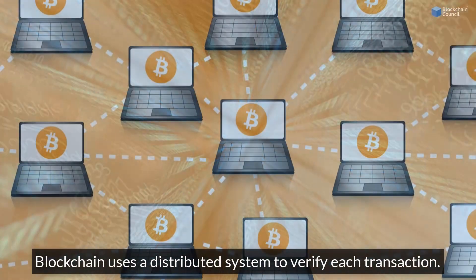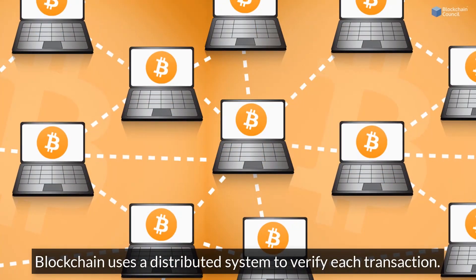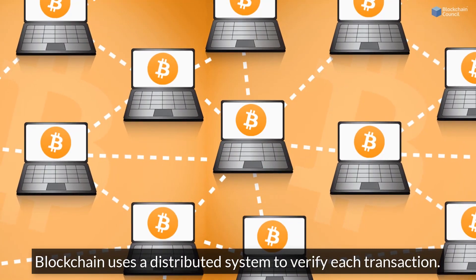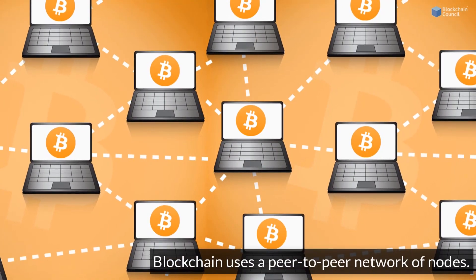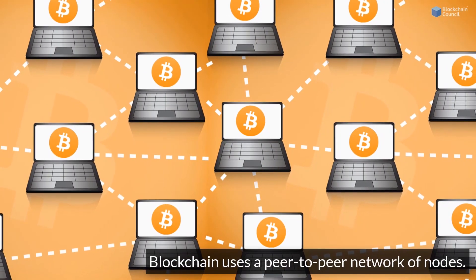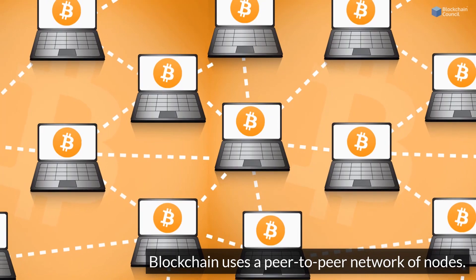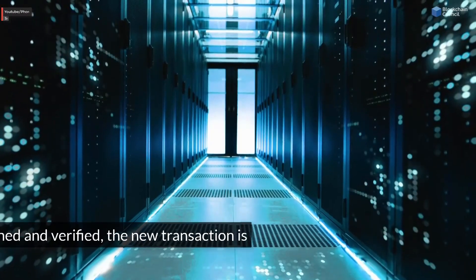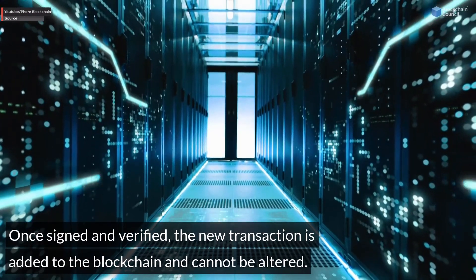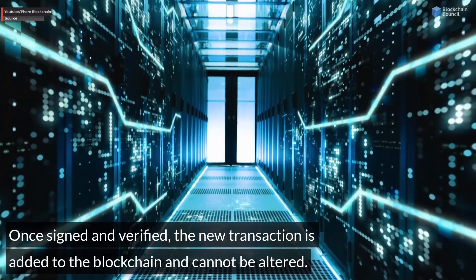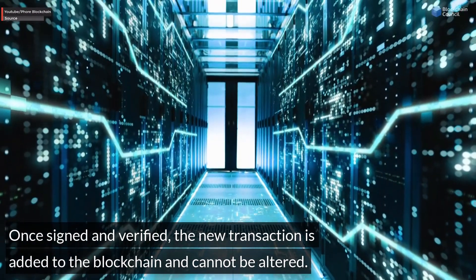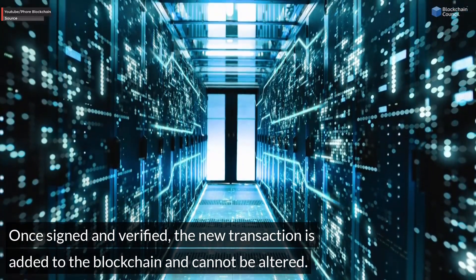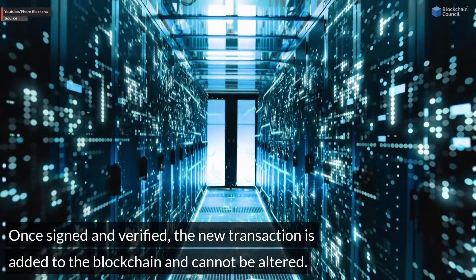Blockchain uses a distributed system to verify each transaction. It uses a peer-to-peer network of nodes. Once signed and verified, the new transaction is added to the blockchain and cannot be altered.